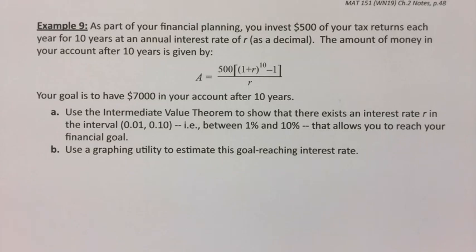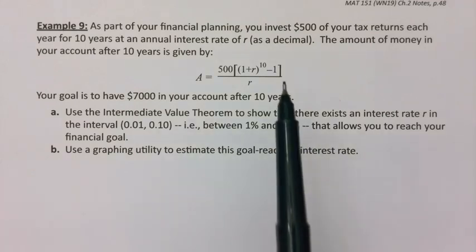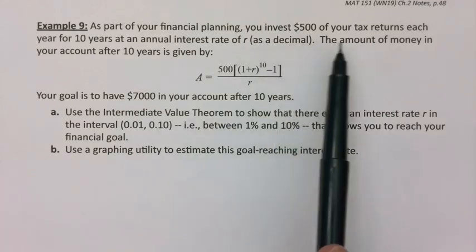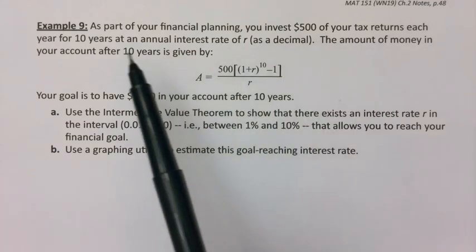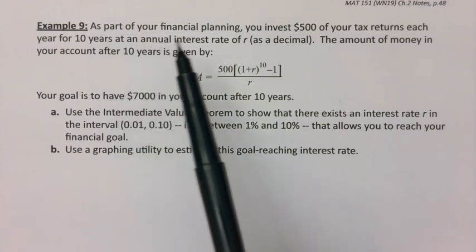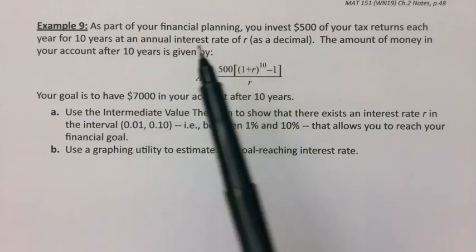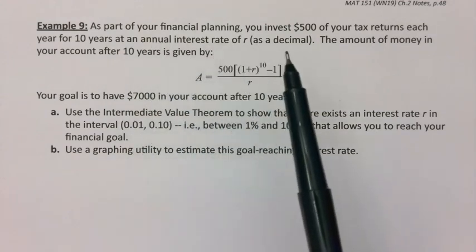As I told you in the last video, the Intermediate Value Theorem actually has a lot of applications. So we're going to do a business application here, a financial planning application. As part of your financial planning, you invest $500 of your tax returns each year for 10 years at an annual interest rate of R.